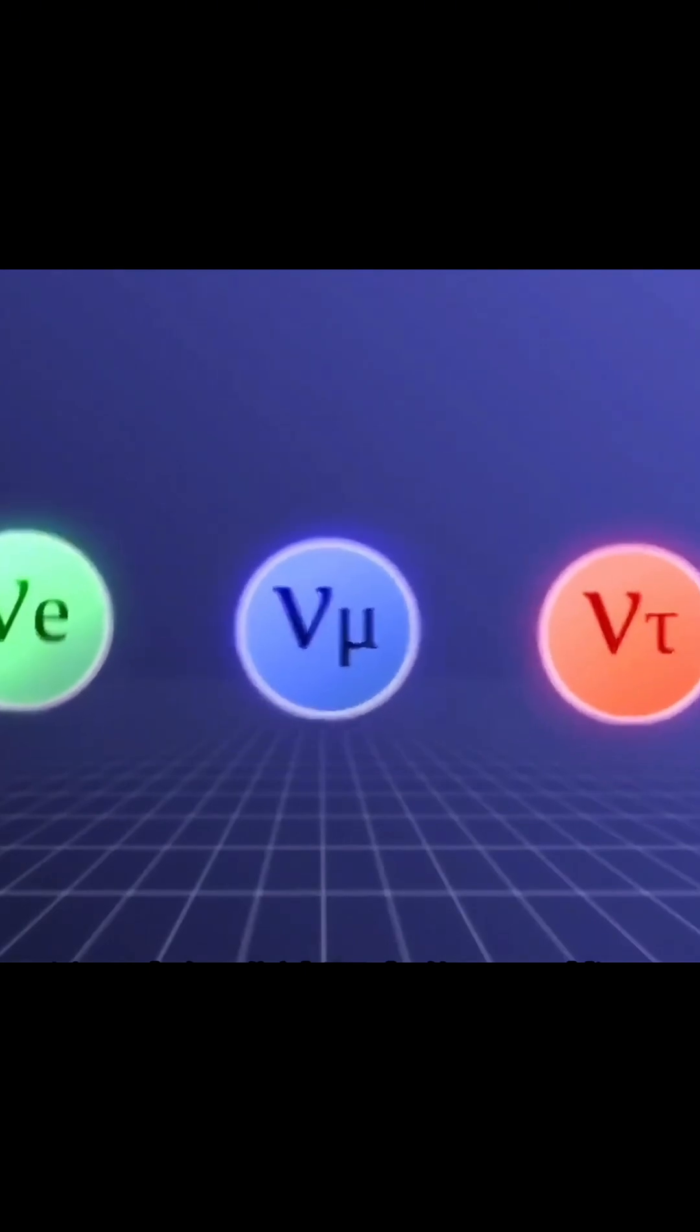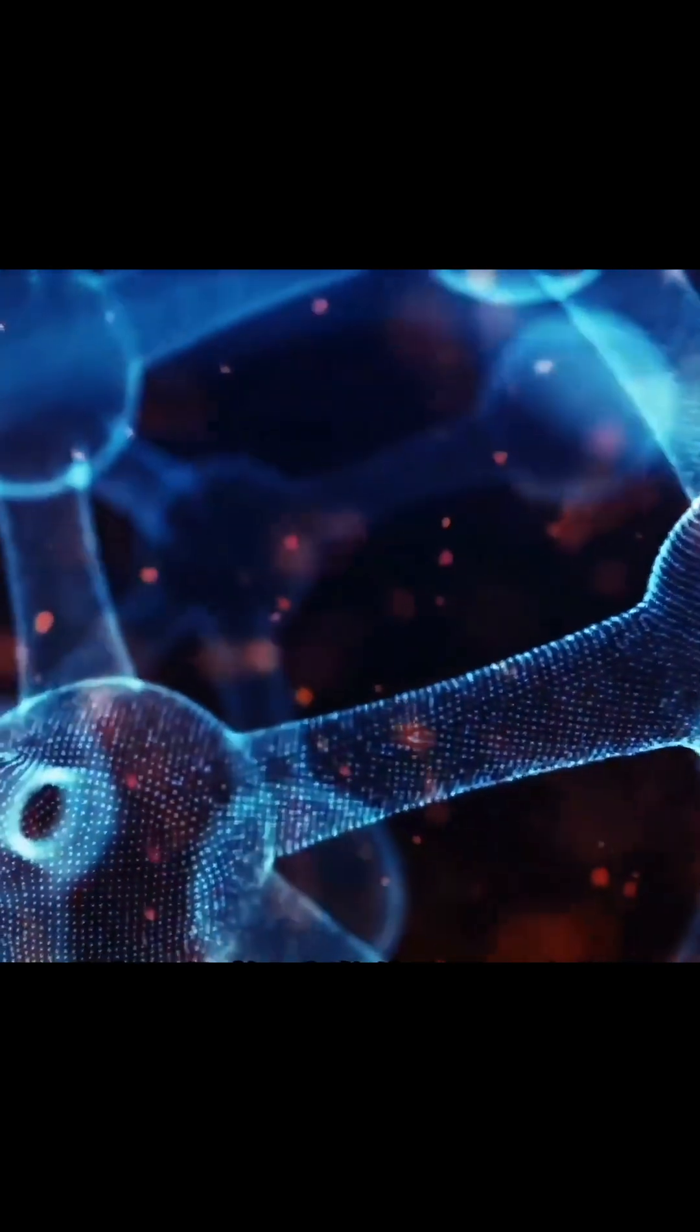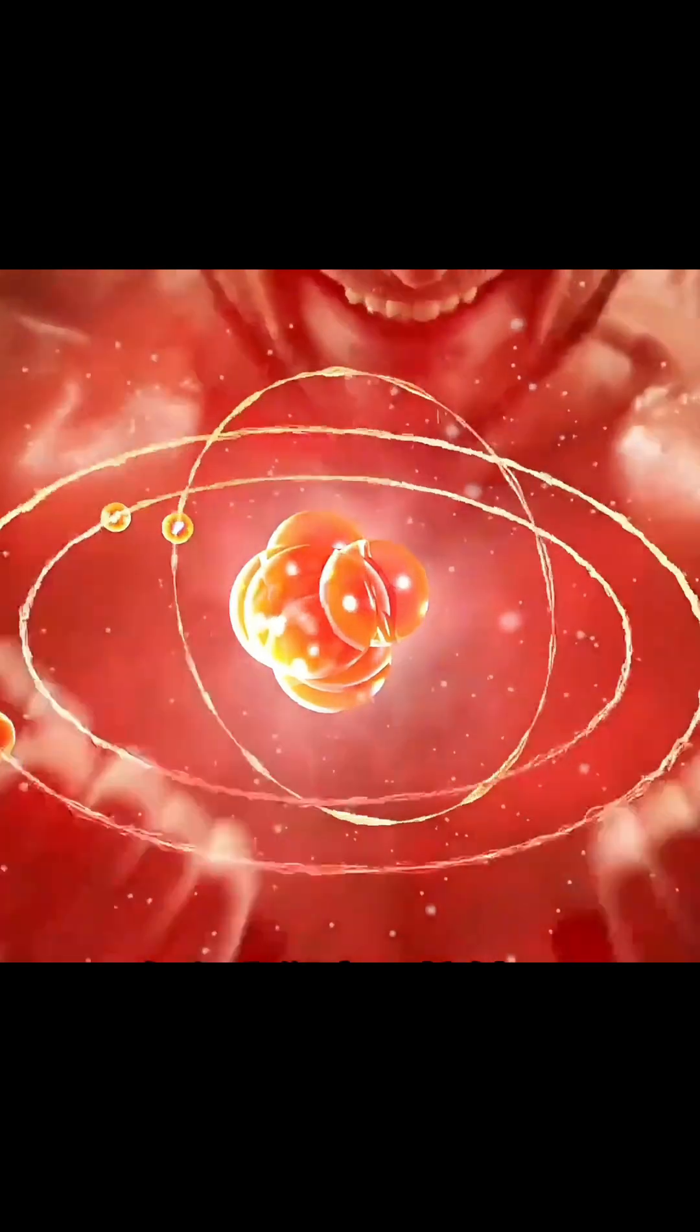With almost no constraints, neutrinos rarely interact with matter. They pass effortlessly through atoms, planets, and stars, like a ghost through a wall. In the time it takes to blink, tens of billions pass right through your body. We feel nothing. This is why they've earned the nickname Cosmic Ghosts.